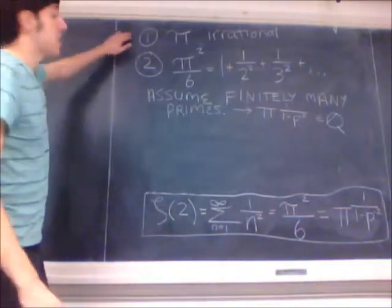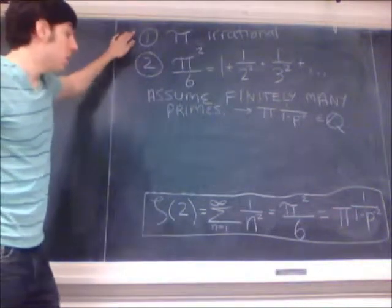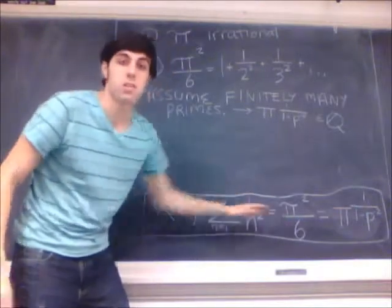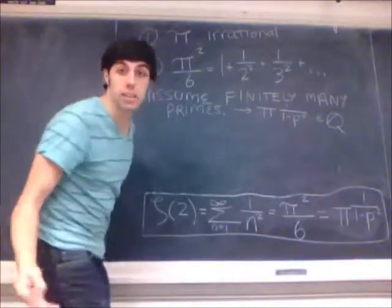Well, we know that pi is irrational. That's one of the things that we assumed in the beginning. So that means that here, pi squared over 6 is also irrational, so it's not in the rational numbers.